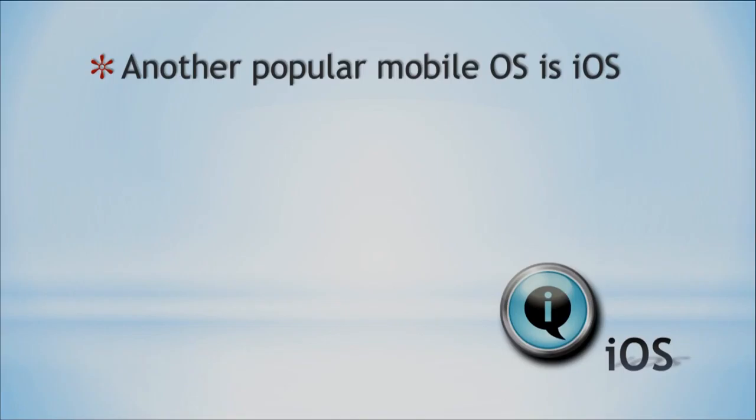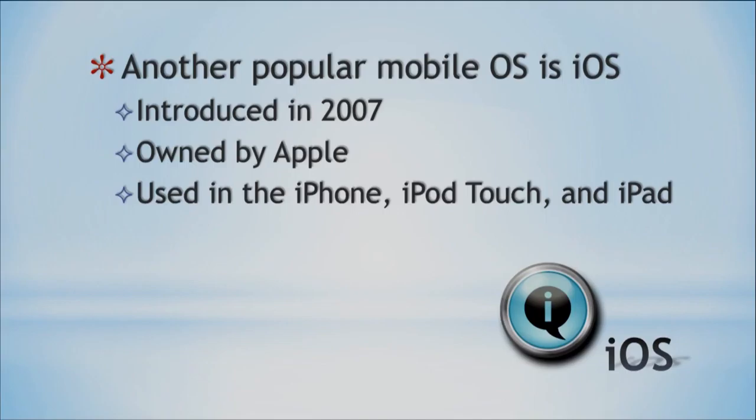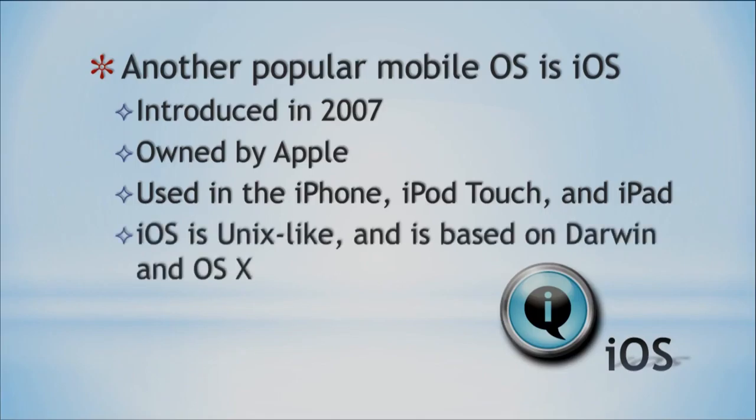Another popular one is, of course, the Apple operating system, iOS, also used for mobile devices. That came about around 2007 and is owned by Apple — the iPhone, iPod touch, iPad, these kinds of things. It's Unix-like; Unix is another operating system. An older version was Darwin, and OSX was another operating system that Apple created. So you've got all these different operating systems with all these different names.